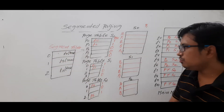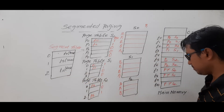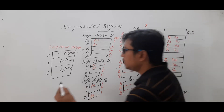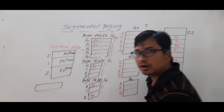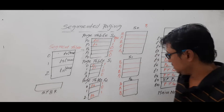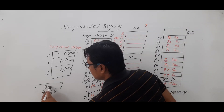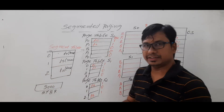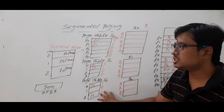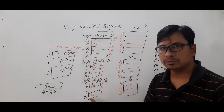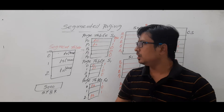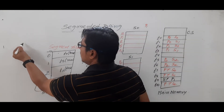The segment table itself is also loaded into one of the frames of main memory. A single register called the Segment Table Base Register (STBR) holds the base address of the segment table — for example, 5000. So if you have multiple segments, you have multiple page tables, one segment table, all stored in frames of main memory, and one register pointing to the segment table.